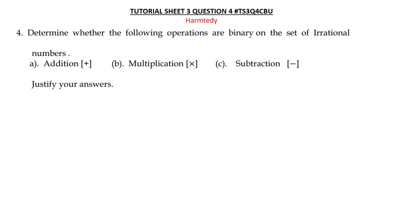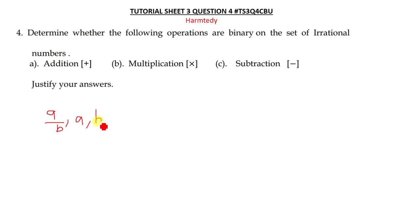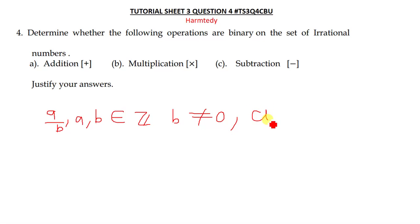First you need to understand what irrational numbers are. Irrational numbers are numbers that cannot be expressed in the form a over b, where a and b are members of integers, and b should never be equal to zero. Sometimes they use x and y, and a and b are co-prime factors, meaning they are in their lowest terms — you can't reduce them further.